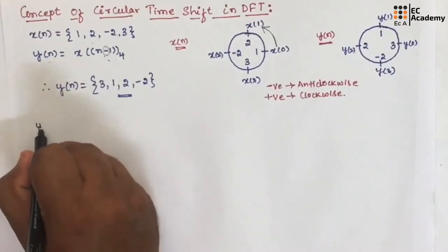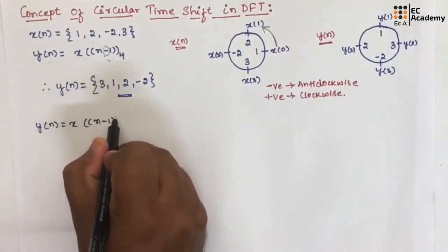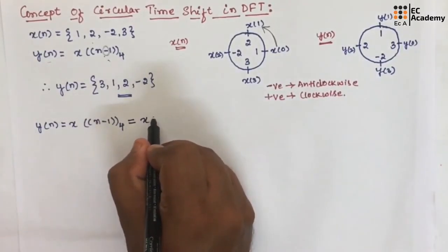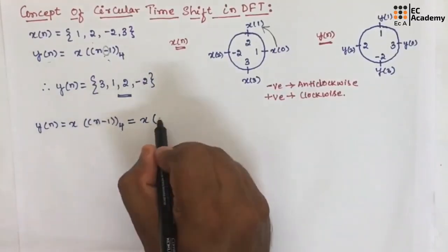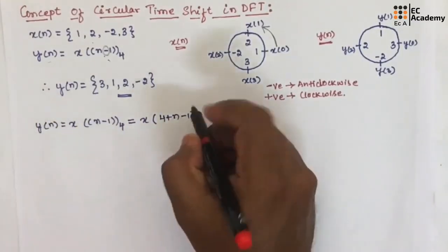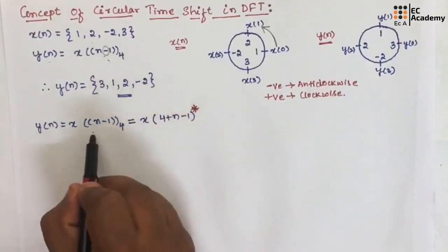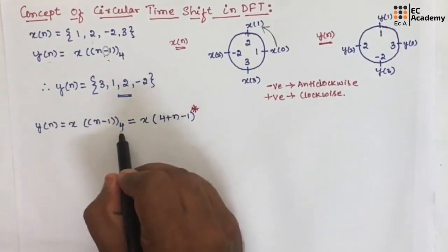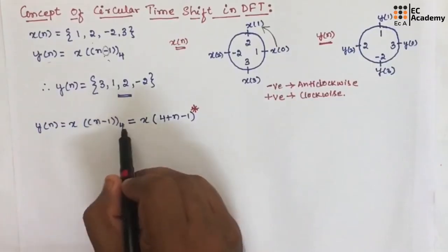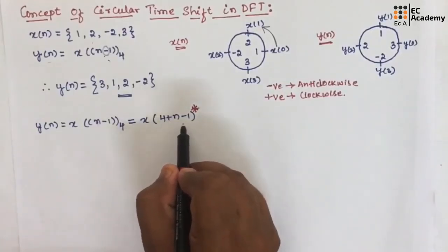Let us write y of n equal to x of (n minus 1) mod 4. For this equation, we add 4 to get x of (4 plus n minus 1). This is a very important concept. The equivalent representation uses the mod value: here they have given mod 4, so we add 4 with n. If they give mod 6, we add 6; if mod 8, we add 8. Since they have given 4, we write x of (4 plus n minus 1).